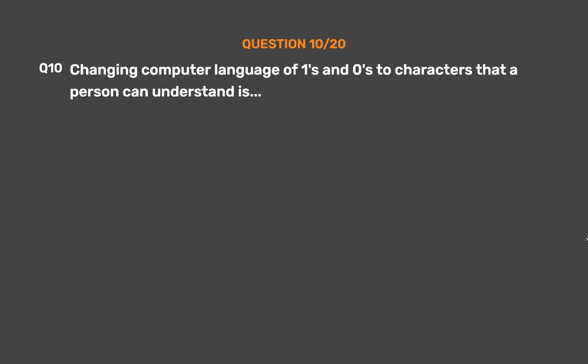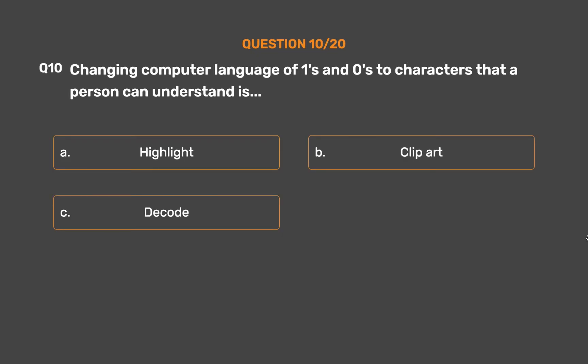Question number 10. Changing computer language of 1s and 0s to characters that a person can understand is. Option A: Highlight. Option B: Clipart. Option C: Decode. Option D: Execute.